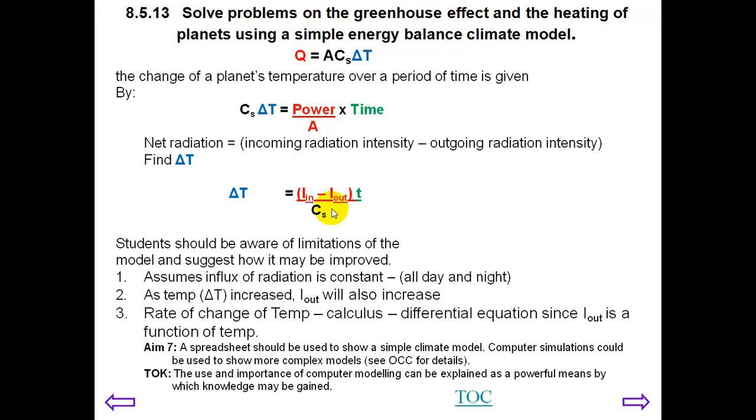Since radiation which is output depends on the temperature, we basically have a differential equation which becomes rather complicated unless you start to use calculus. We're not going to use calculus. We just have to do it in small steps and make changes accordingly. We can use a spreadsheet to do this because we can take thousands of steps without having to use calculus.